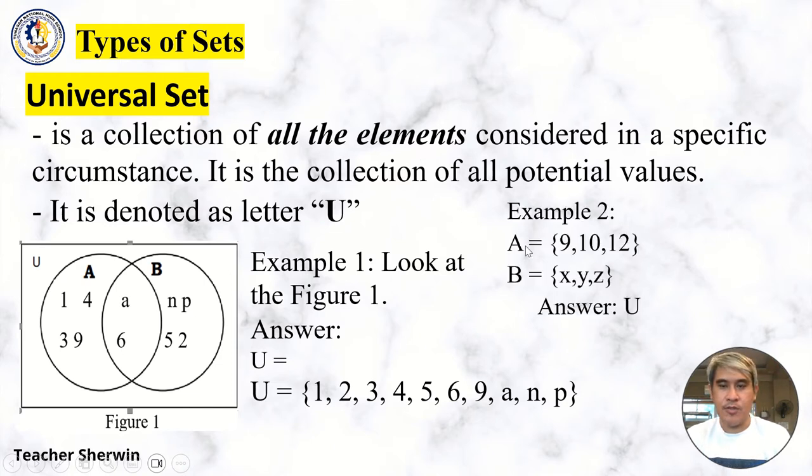Example 2: Set A = {9, 10, 12}, Set B = {X, Y, Z}. The answer is {9, 10, 12, X, Y, Z}. That's all the elements. It's what we call the Universal Set.